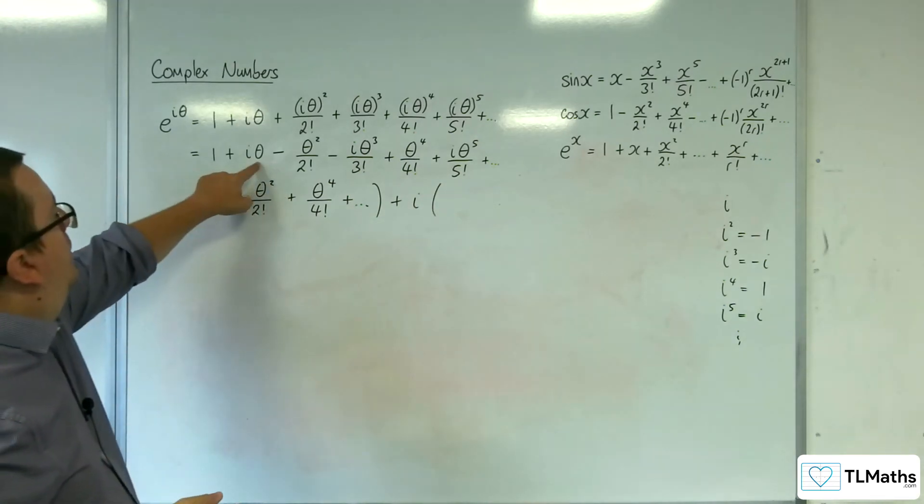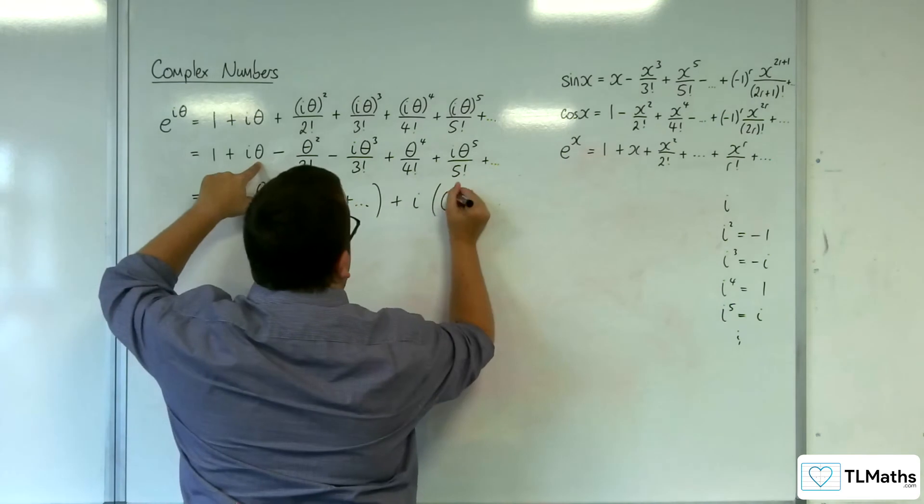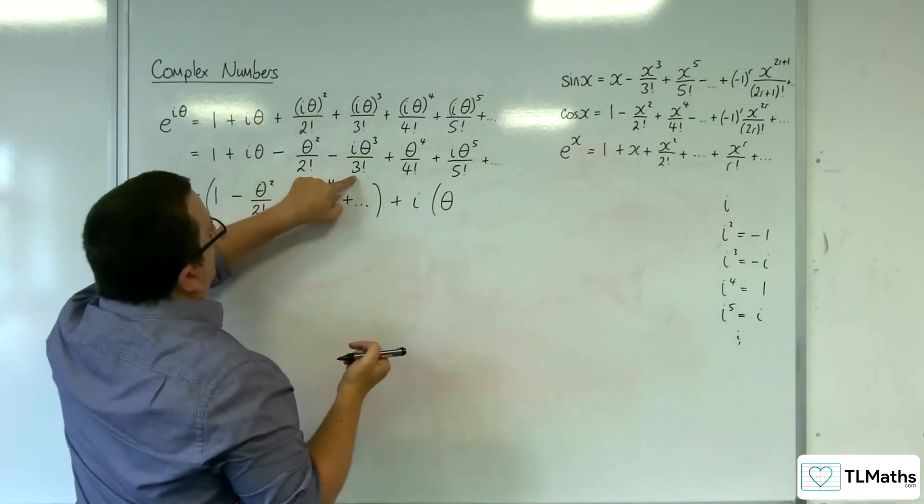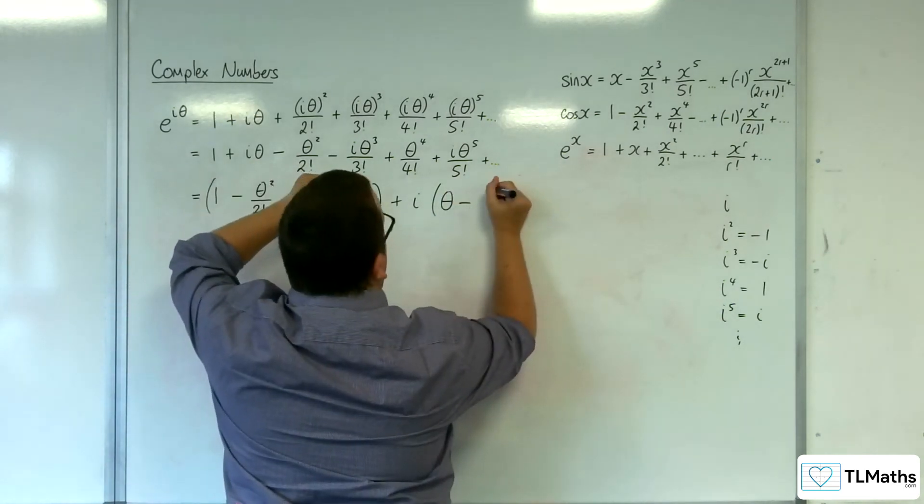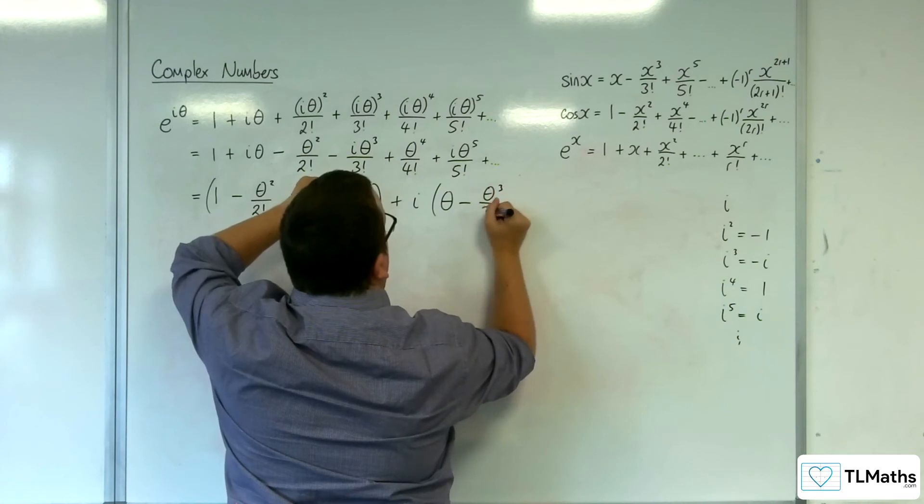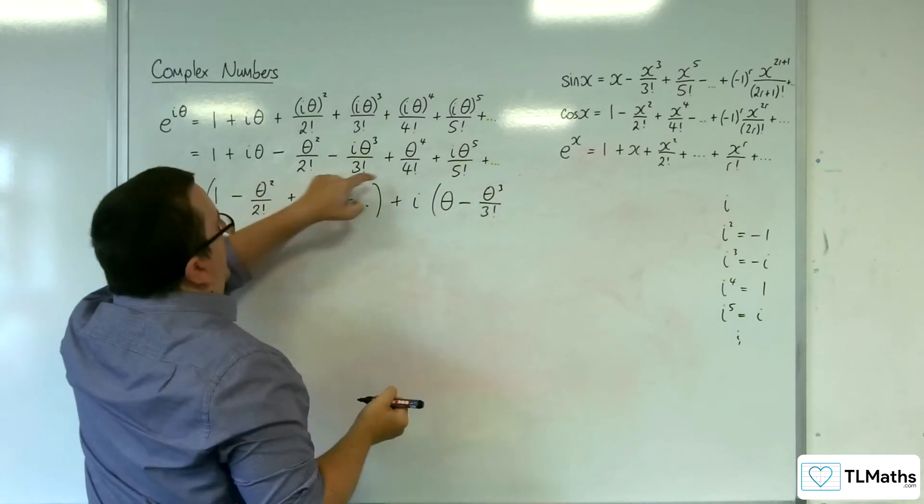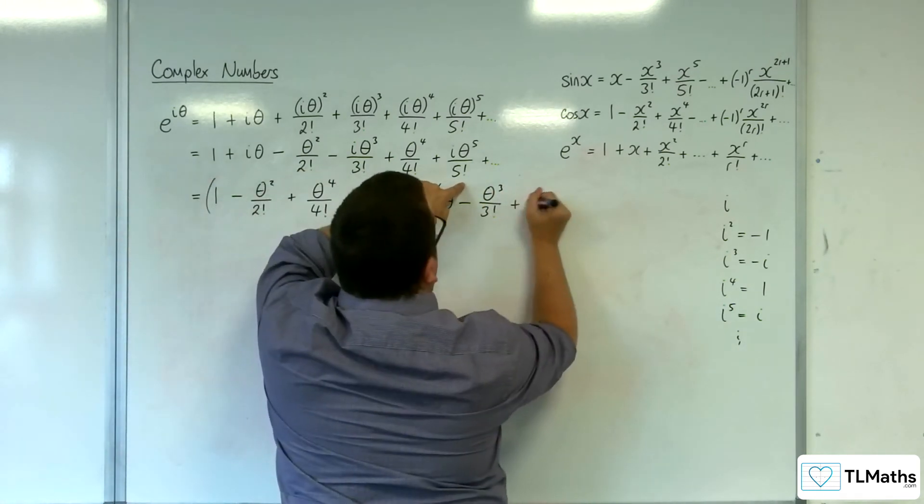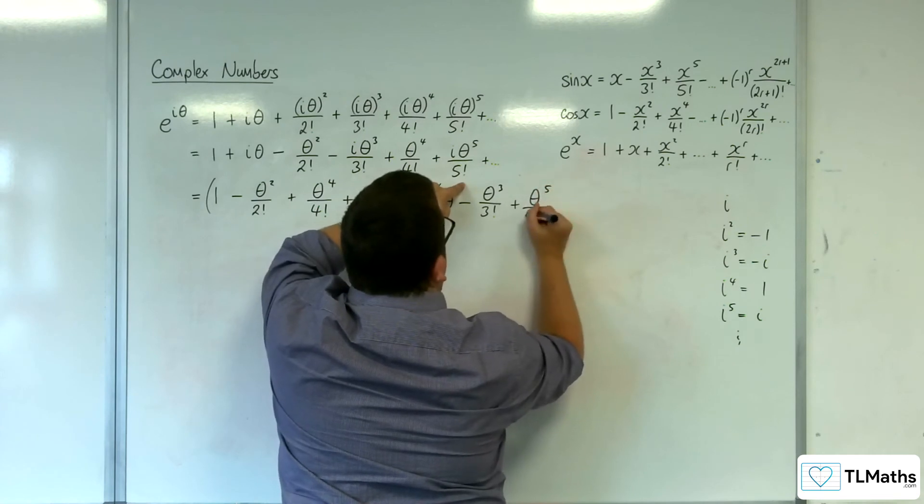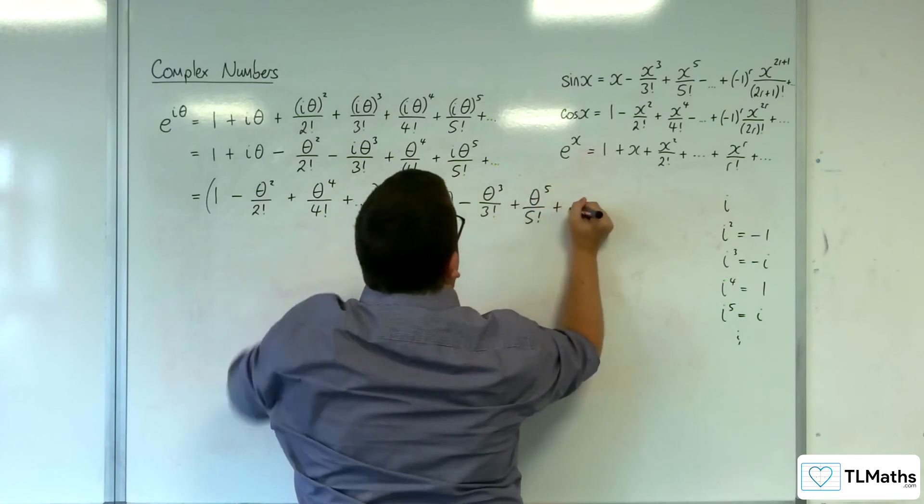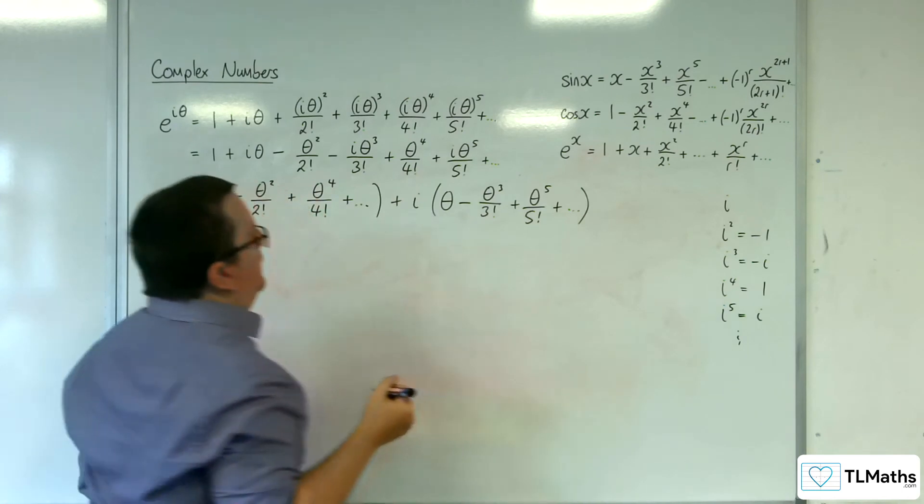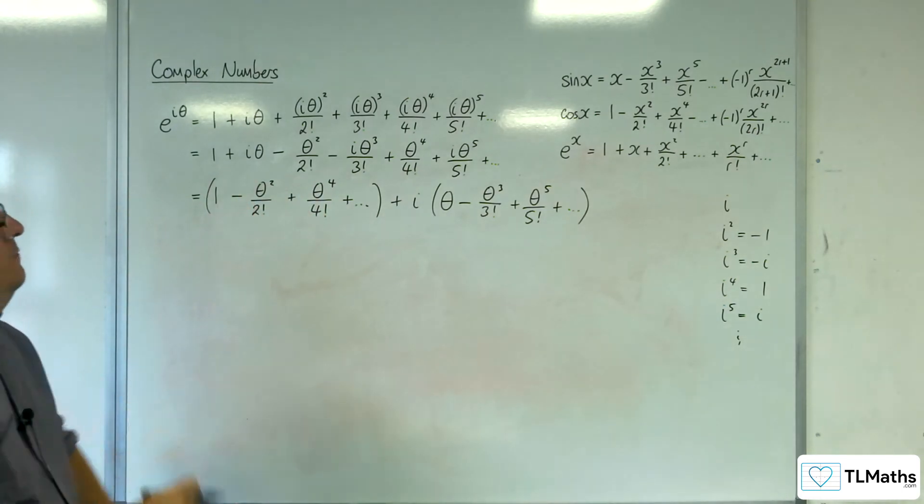now the imaginary part. So we've got theta, then we've got take away theta cubed over 3 factorial. Then we're going to have plus theta to the 5 over 5 factorial, plus an infinite number of other terms.